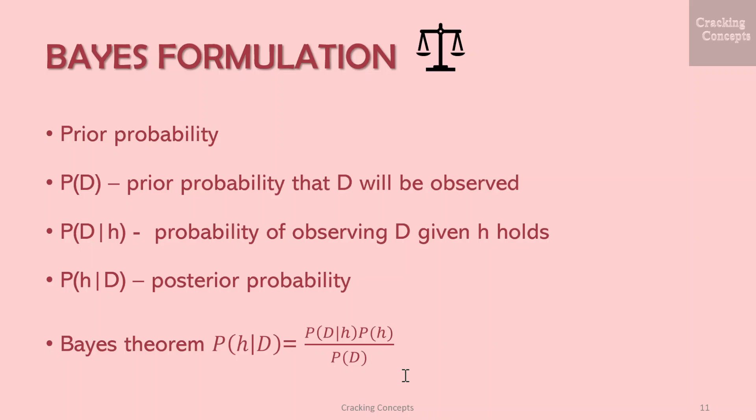Similarly, we write P(d) to denote the prior probability that training data d will be observed. We write P(d|h) to denote the probability of observing data d given that hypothesis h holds. In machine learning, we are interested in the posterior probability P(h|d) — that h holds given the observed training data d — which reflects our confidence in h after seeing the data, in contrast to the prior P(h) which is independent of d. Bayes' theorem is written as: P(h|d) = P(d|h) · P(h) / P(d).